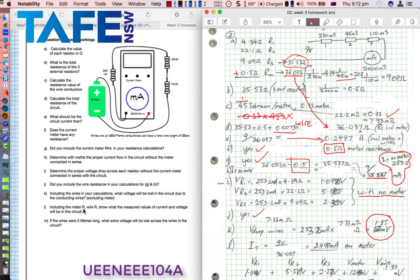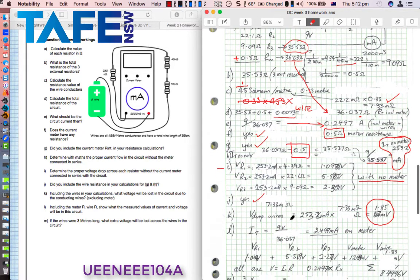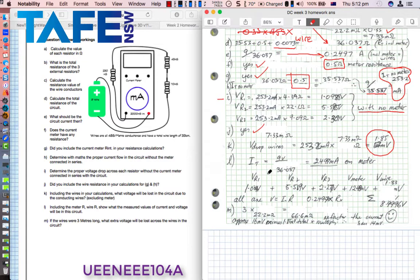Part L, including the meter resistance and the wire resistance, show what the measured values of current and voltage will be in this circuit. The current total will be 9 volts divided by 36.037 to give me 249.7 milliamps on the meter. Then VR1, I run the maths using V equals I times R, and I get 1.084 volts. VR2, 5.519 volts. VR3, 2.27 volts. And V meter, 1.24 volts. And V wire, 1.83 millivolts, not very much at all.